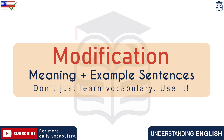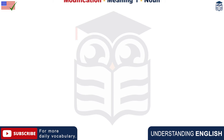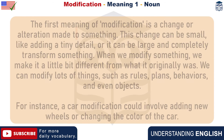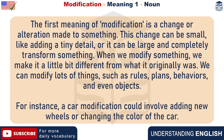Modification: Meaning and Examples. The first meaning of modification is a change or alteration made to something. This change can be small, like adding a tiny detail, or it can be large and completely transform something.